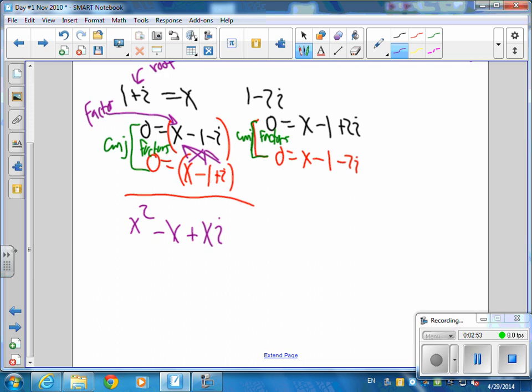1 times negative 1 times x is negative x plus 1 minus i. Then you're ready for the third one. So negative xi plus i.